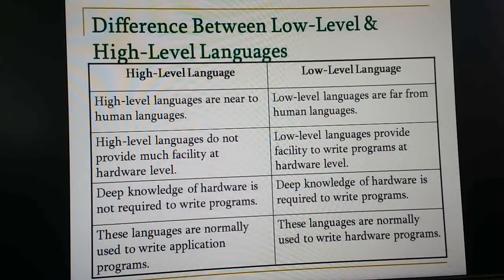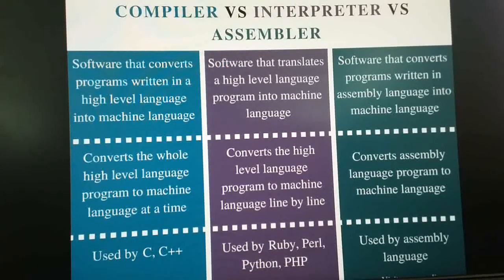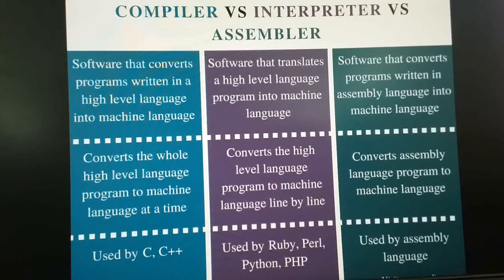Now we will discuss the compiler, interpreter, and assembler — these three are very important language translators. Because computers understand machine language, which we don't know, and we know English which computers cannot understand, we need a converter or translator. A compiler is software that converts programs written in a high-level language into machine language. It converts the whole high-level language program into machine language at once, and if any error is present it will show it. Examples are C and C++.